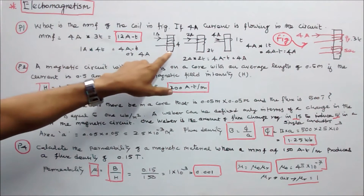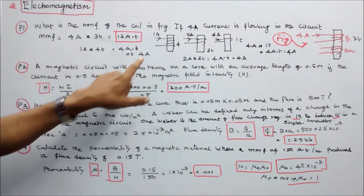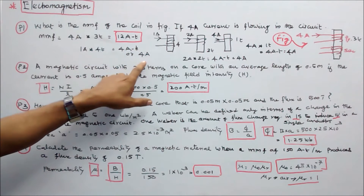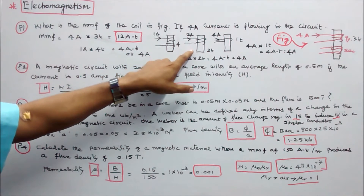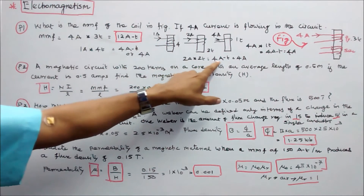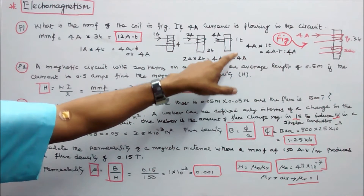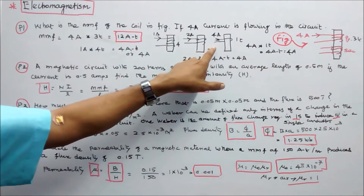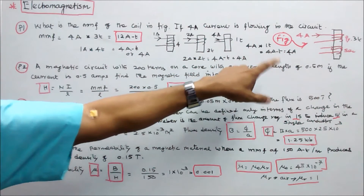Here, 4 turns into 1 amp equals 4 ampere turns. Here, 2 turns into 2 amps equals 4 ampere turns. Here, 1 turn into 4 amps equals 4 ampere turns.